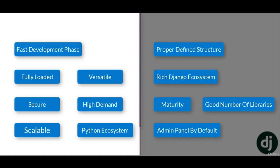The next reason is scalable. A perfect example is Udemy itself — they handle more than 14 million users each day, and Udemy is built on Django. So you can understand how scalable a web application can be using a Django back end. Another very important point is the Python ecosystem. Python is growing very fast — Netflix uses Python, the black hole image was developed with Python. You need to understand the importance of the Python ecosystem and community.